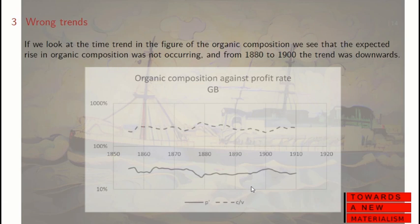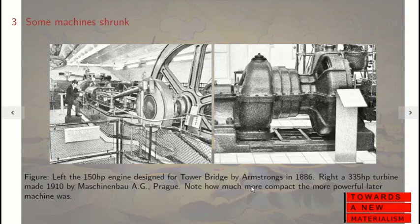But if we look at the trend shown earlier in the figure of organic composition, we don't see much of a constant rise after he was writing. He was writing in the mid-1860s, and there's a bit of a rise up until 1880, then it tends to decline — declining until about 1900, then a slight rise again. So there wasn't the long-term rise he was expecting based on his observations of the Industrial Revolution up to 1860.